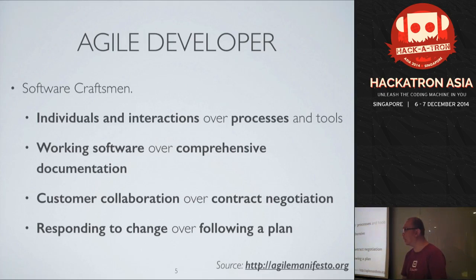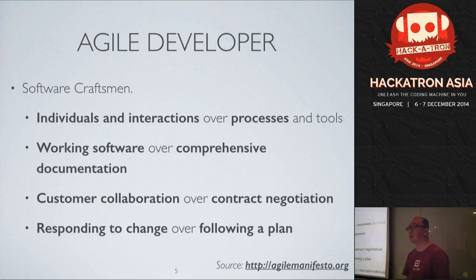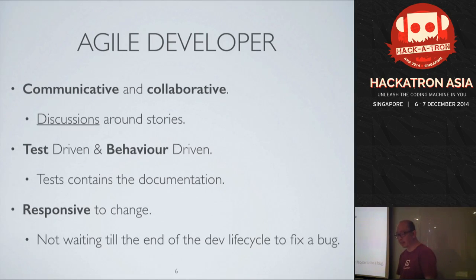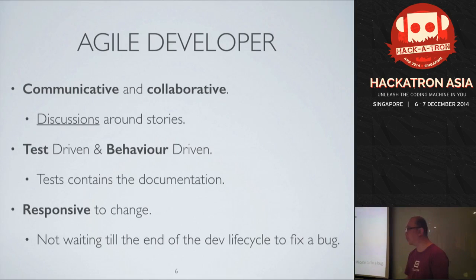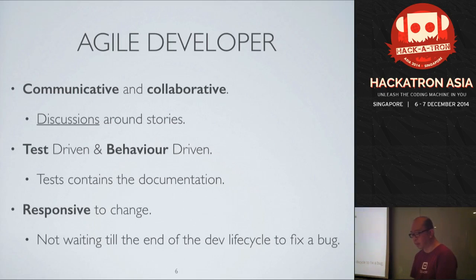An agile developer also responds to change rather than following the plan, because things can happen in the midst of developing a project. A project can take about a year or more, so being able to respond quickly to changes is important for the client. An agile developer needs tools and processes that help them get this done — they are also communicative and collaborative, discussing with stakeholders, having conversations over stories, and using tools that help them communicate and collaborate better.